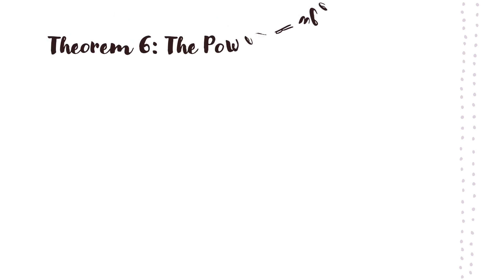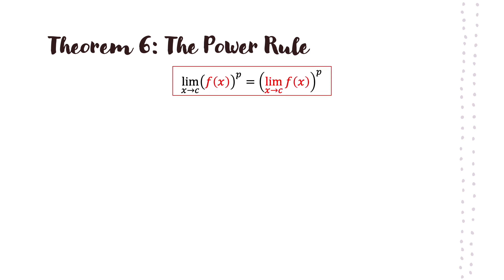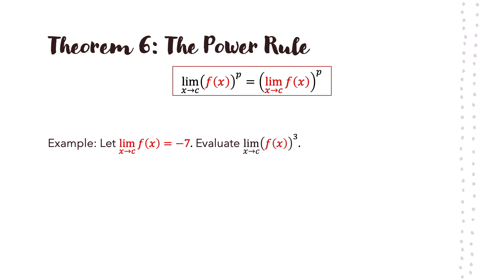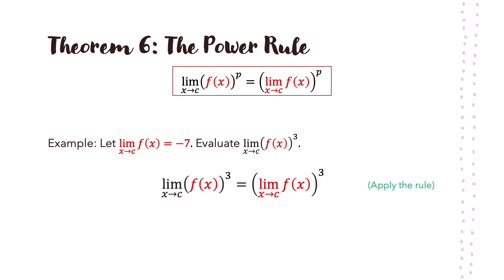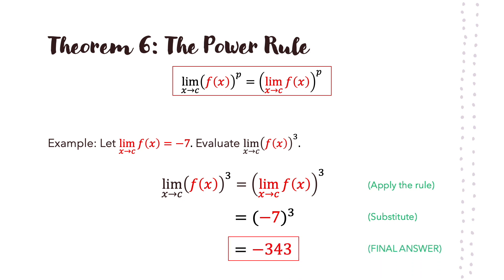The next rule is the power rule. This one works when you have exponents. The limit of f(x) to the power of b as x approaches c is equal to the limit of f(x) as x approaches c, raised to the power of b. For example, let the limit of f(x) as x approaches c equal negative 7. Evaluate the limit of f(x) cubed as x approaches c. Apply the rule, plug in negative 7, and solve: that's negative 343.